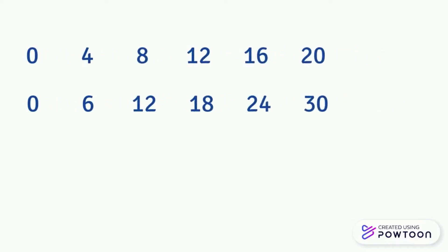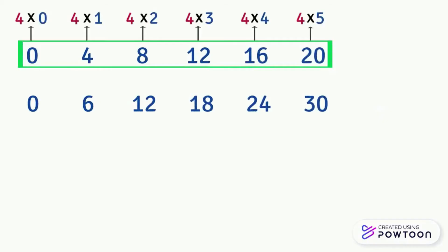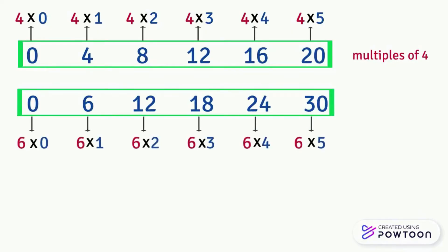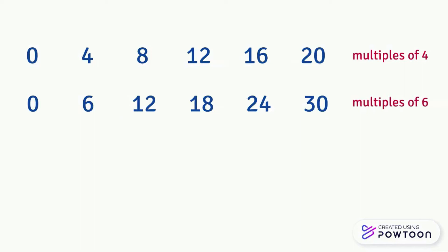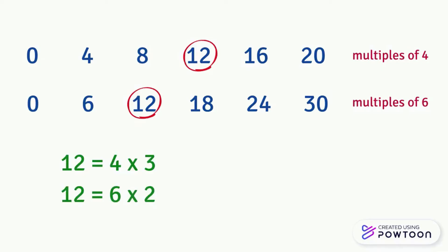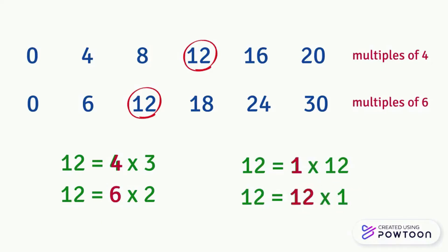Observe these two lists of numbers. The first list contains the results of multiplying by 4, which means the multiples of 4. The second list contains the results of multiplying by 6, which means the multiples of 6. Notice that the number 12 appears in both lists. 12 is a multiple of 4 because 12 equals 4 times 3, and 12 is also a multiple of 6 because 12 equals 6 times 2. So 12 is both a multiple of 4 and 6 — 12 is a common multiple of 4 and 6. We can also say that 12 equals 1 times 12, so 12 is a multiple of 12.